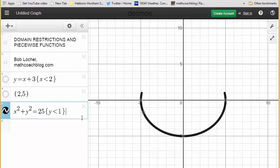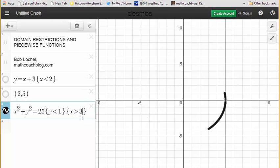I could do a range restriction and a domain restriction: y is less than 1 and x is greater than 3. And I just get that little slice of the circle. So you can do domain and range restrictions, putting them both into braces.